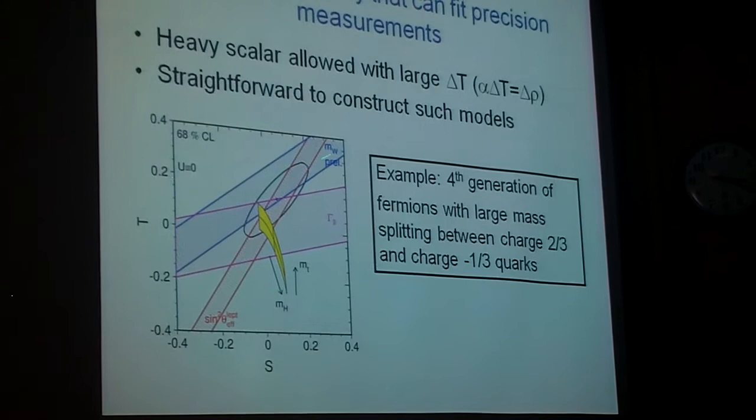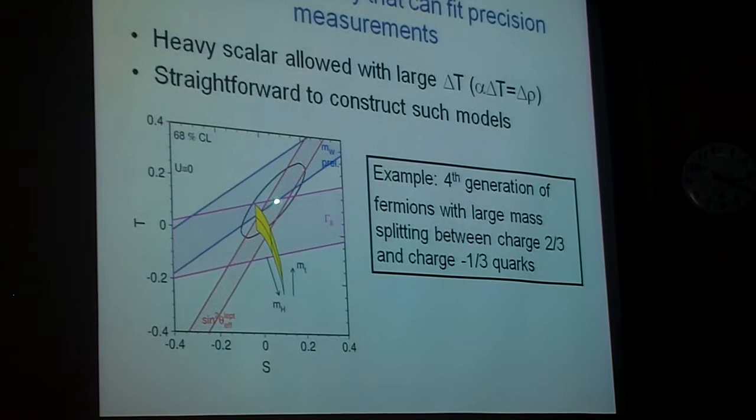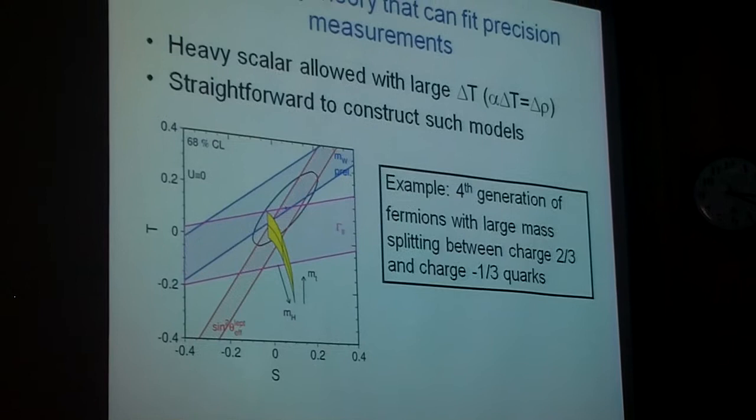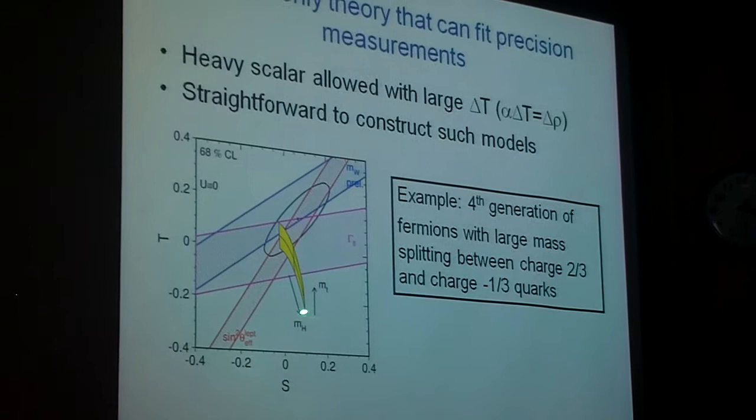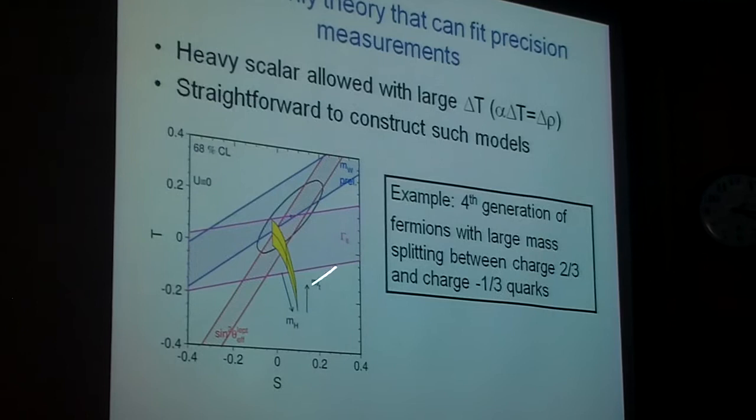And the black dot in the middle is the fit from all this data. And as you try to make the scalar heavier, heavier in this 185 GeV, you move away from the data. So it's easy. What do I have to do if I want to have, say, a 1 TeV scalar particle? I need to construct a theory with a large positive delta T to get me back up to the fit. And so one example would be a fourth generation of fermions with a large mass splitting. That'll do it.